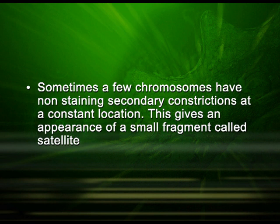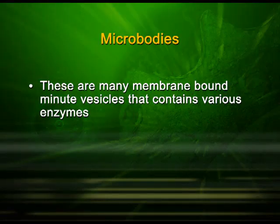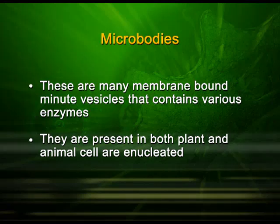Sometimes a few chromosomes have non-staining secondary constrictions at a constant location, giving the appearance of a small fragment called a satellite. Apart from all these organelles, eukaryotic cells may also contain certain microbodies — membrane-bound minute vesicles that contain various enzymes, present in both plant and animal cells. Before concluding the lesson on 'the cell: the unit of life,' a few things you must remember.